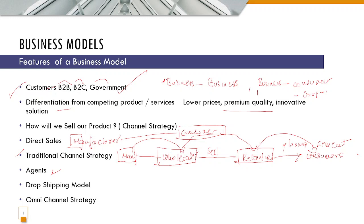Once the agent arranges a sale to the customer, they receive a commission or brokerage from the manufacturer. When you sell goods through agents, there is no transfer of ownership. The agent's job is just to locate a suitable buyer for the manufacturer's products. Once the sale is done, the agent gets some commission. Agents do not get ownership of the goods.